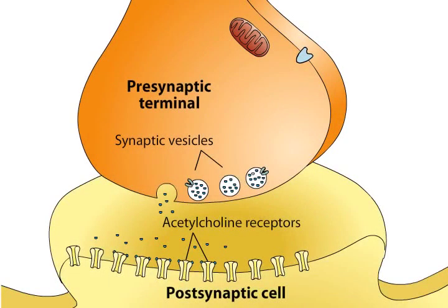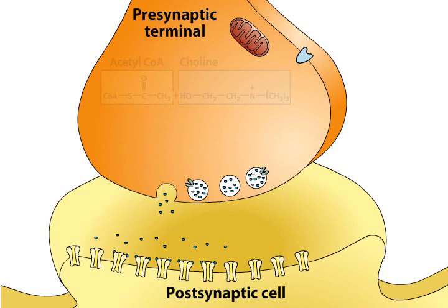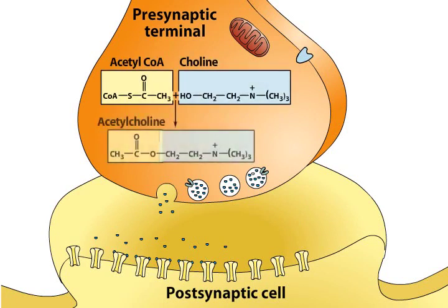Acetylcholine, abbreviated ACH, was the first neurotransmitter to be identified. Acetylcholine is synthesized in the nerve terminal from acetyl coenzyme A and choline in a reaction catalyzed by the enzyme choline acetyltransferase. Neurons that use acetylcholine as a transmitter are called cholinergic neurons.